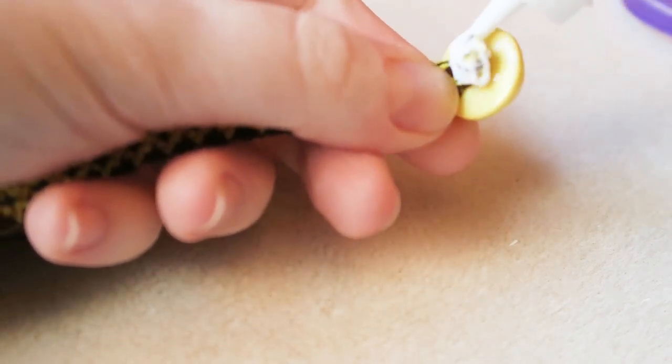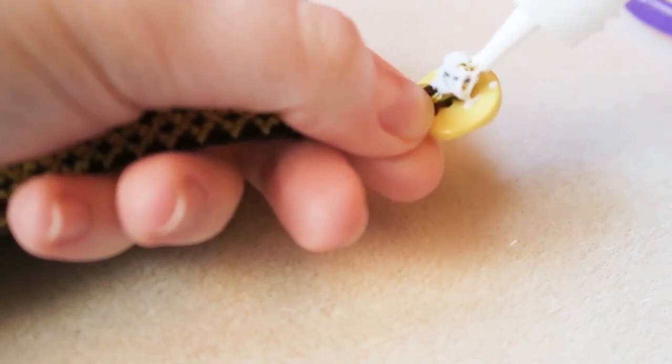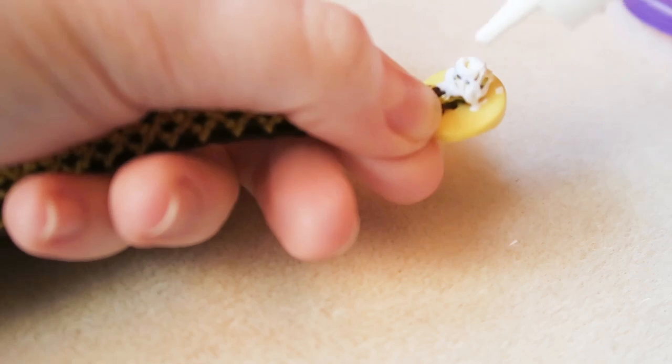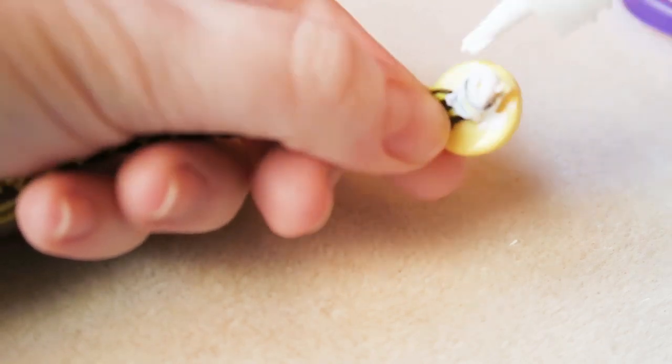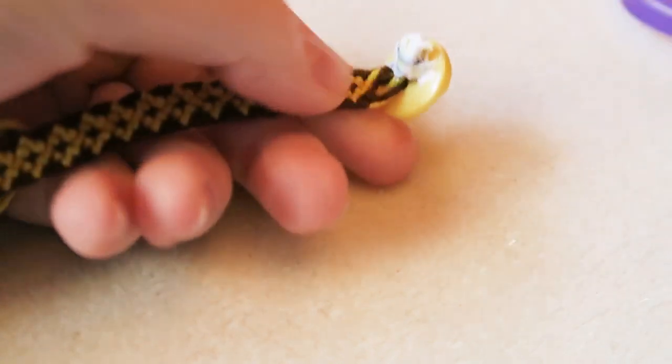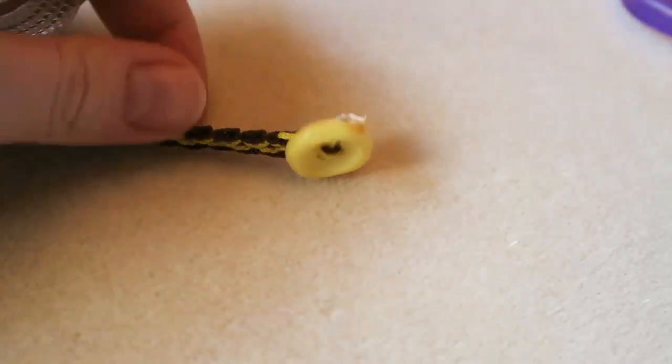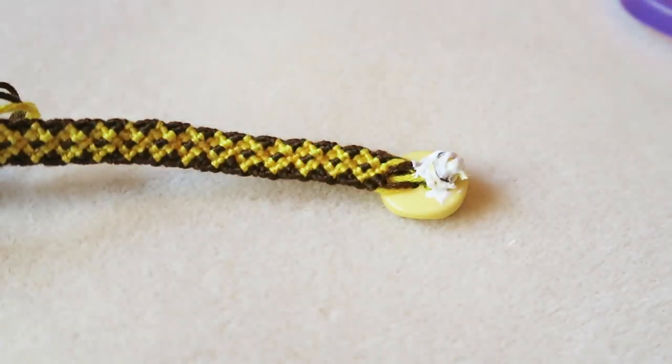Don't worry if you get any on the button itself. The fabric glue that I use, I'm imagining all fabric glue is the same, it's designed to stick to fabric, so you can just peel it off the button. Then just leave it till it's dry and then it's ready to wear.